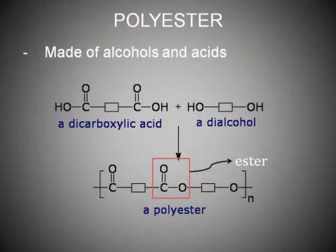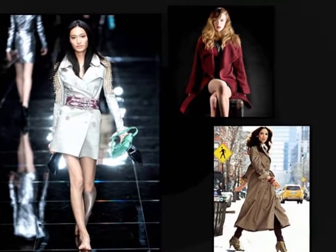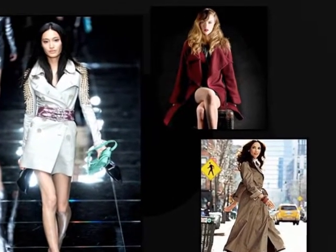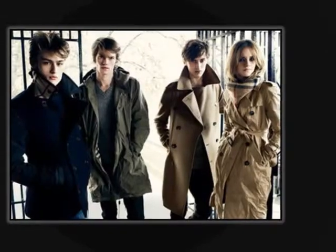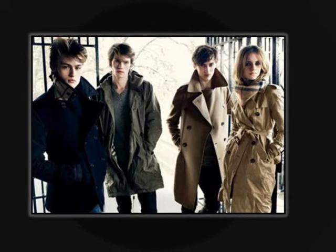Polyester is made of alcohols and acids, and was introduced to the American public in 1951. Polyester is a category of polymer containing ester functional groups in their main chain, and is widely used in manufacturing woven fabrics for winter wear, making it a potential substitute for cotton.